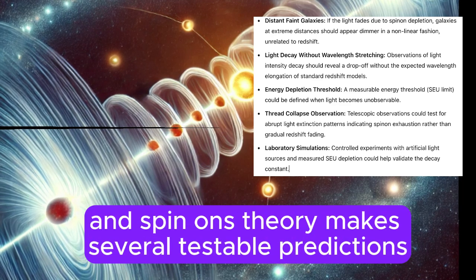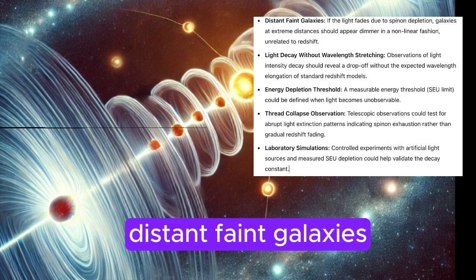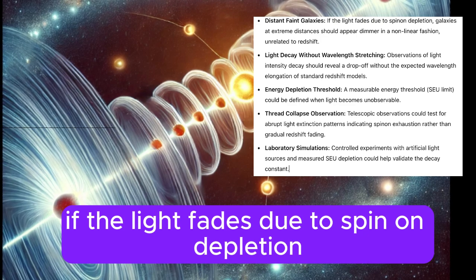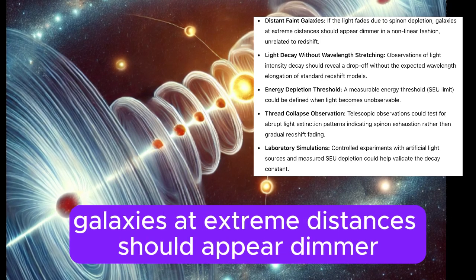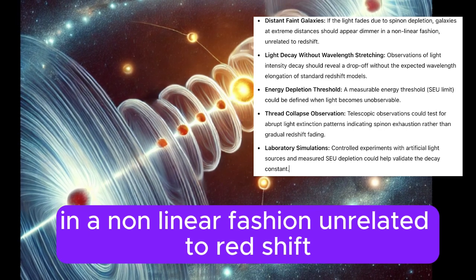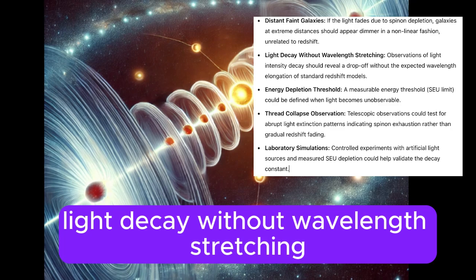Experimental predictions and implications: The threads and spin-ons theory makes several testable predictions. Distant faint galaxies: If light fades due to spin-on depletion, galaxies at extreme distances should appear dimmer in a non-linear fashion, unrelated to redshift. Light decay without wavelength stretching: Observations of light intensity decay should reveal a drop-off without the expected wavelength elongation of standard redshift models.